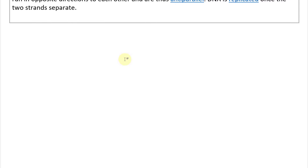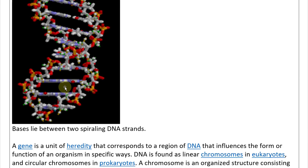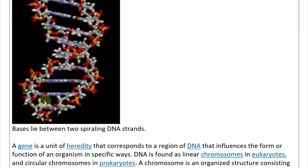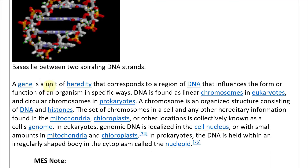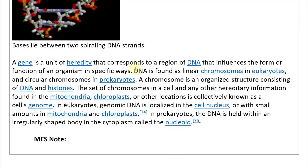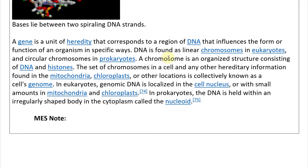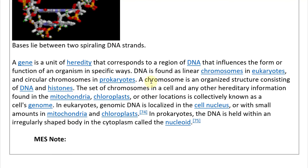DNA is replicated once the two strands separate. Here is an illustration: the bases lie between two spiraling atom strands, connected by hydrogen bonds in the middle, while the backbone consists of alternating sugar and phosphate covalent bonds. A gene is a unit of heredity corresponding to a region of DNA that influences the form or function of an organism. DNA is found as linear chromosomes in eukaryotes and circular chromosomes in prokaryotes.